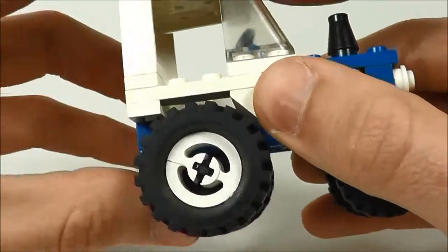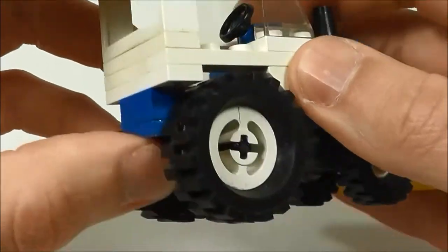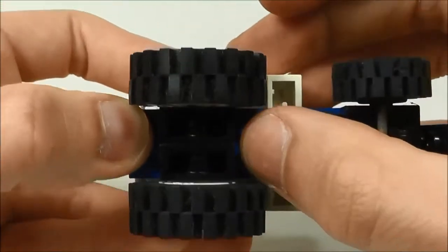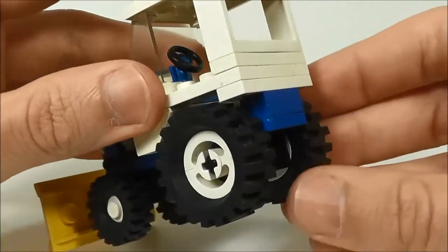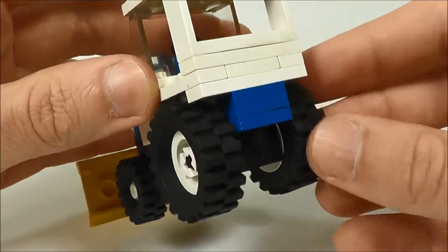On the back it kind of uses the Technic pieces. You've got the wheel on the back and that goes through some black pieces that have holes in them. So that's what makes that wheel spin. And I like that they used a different style of wheel on the back.